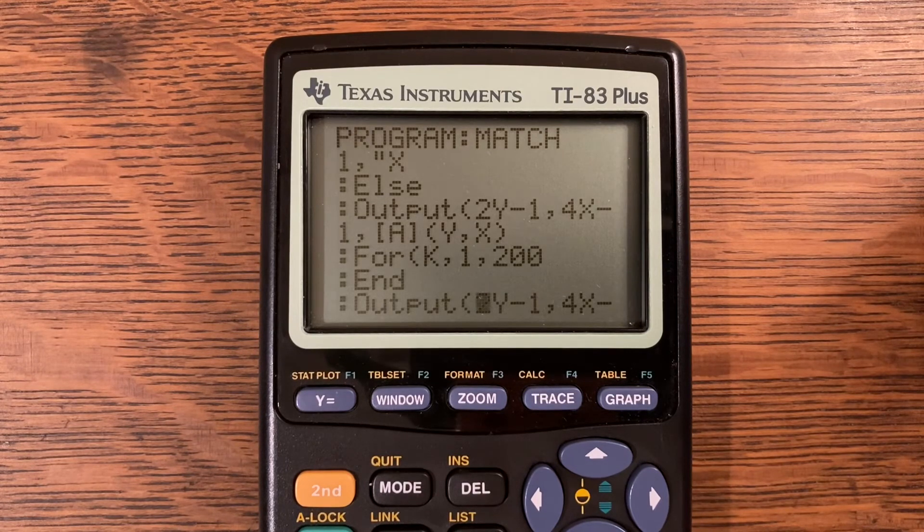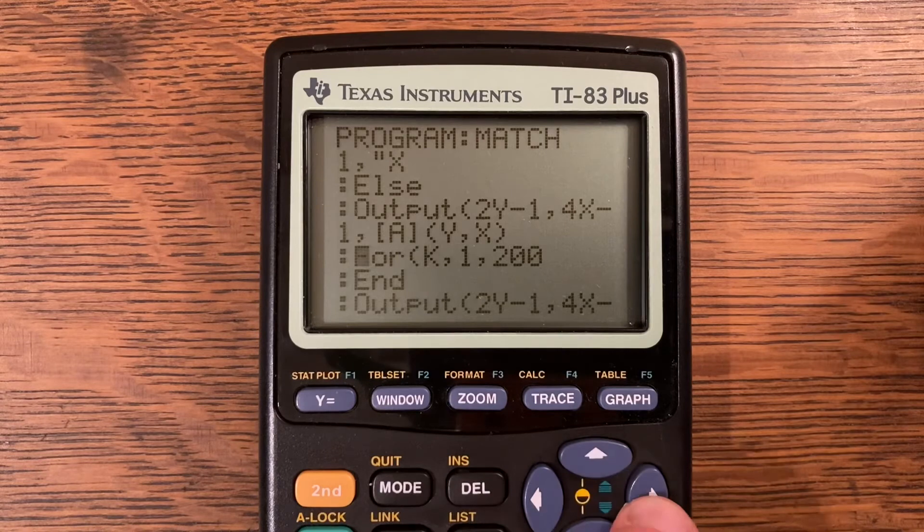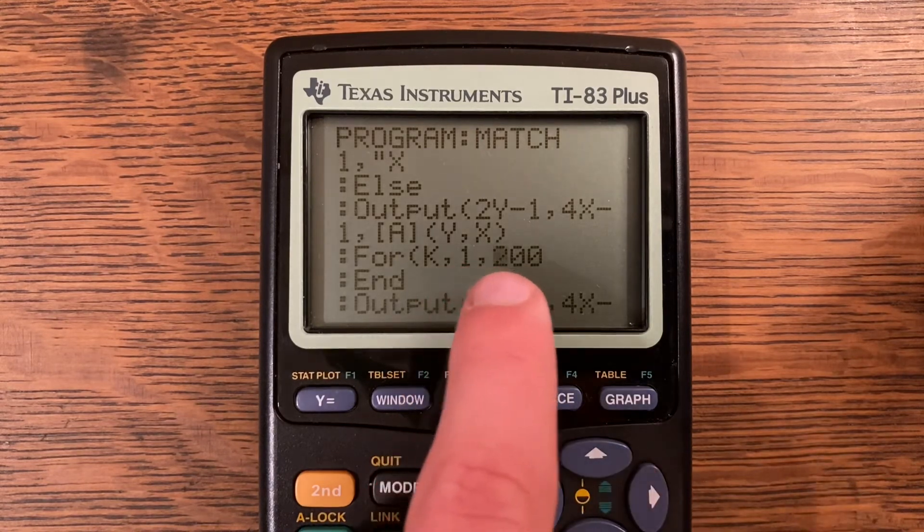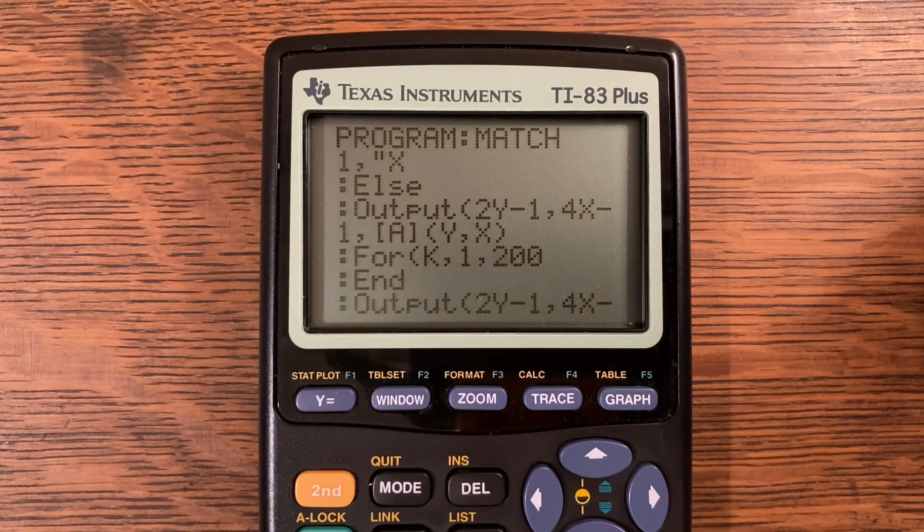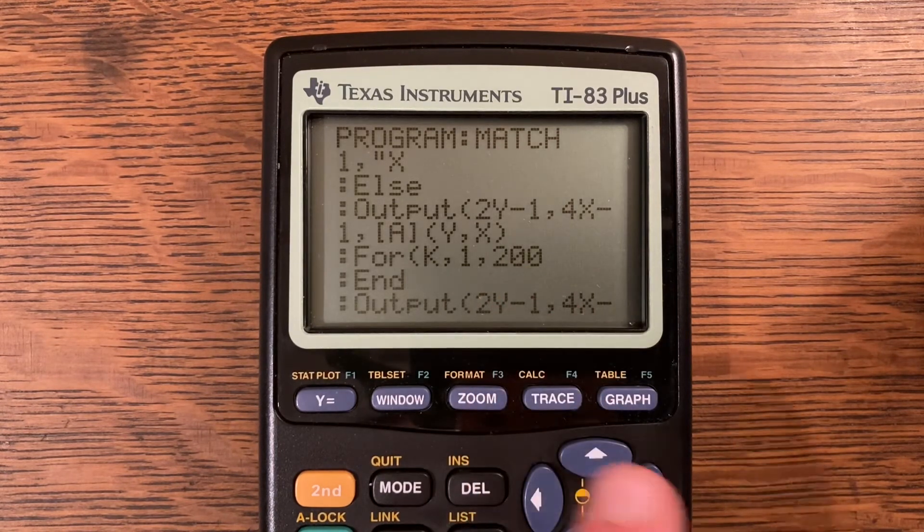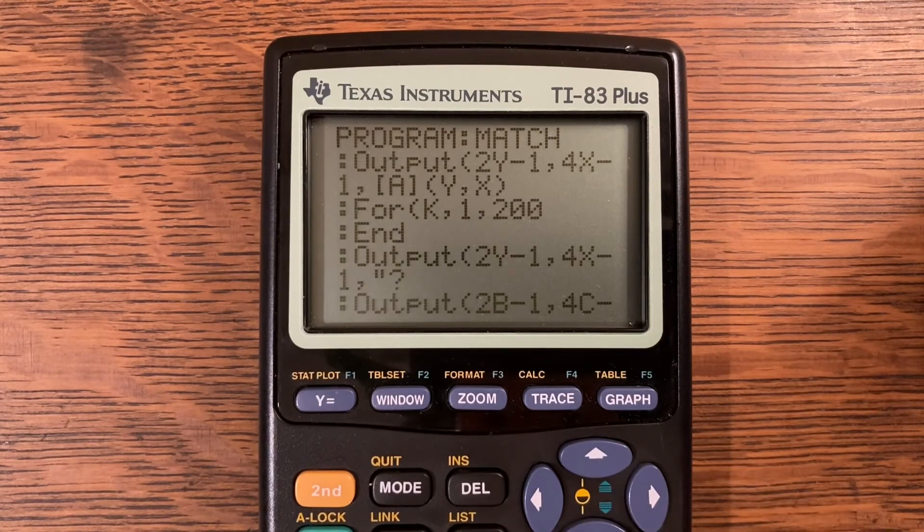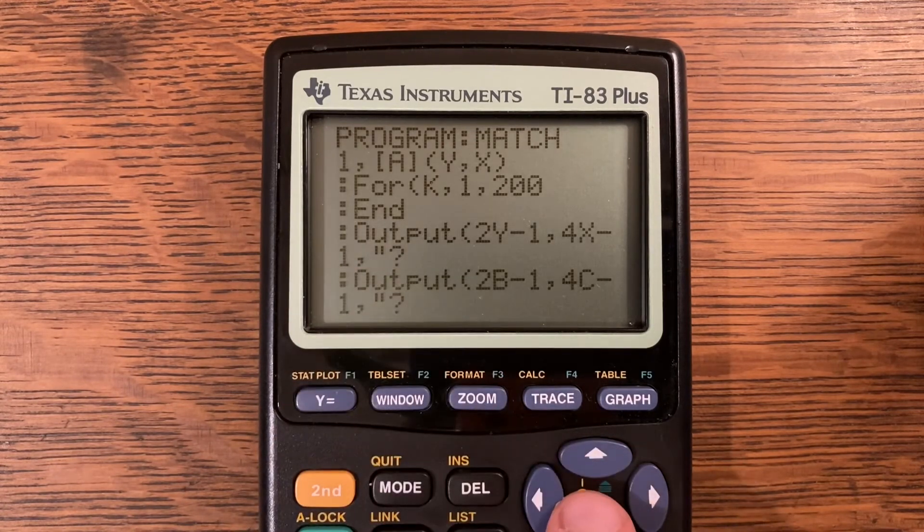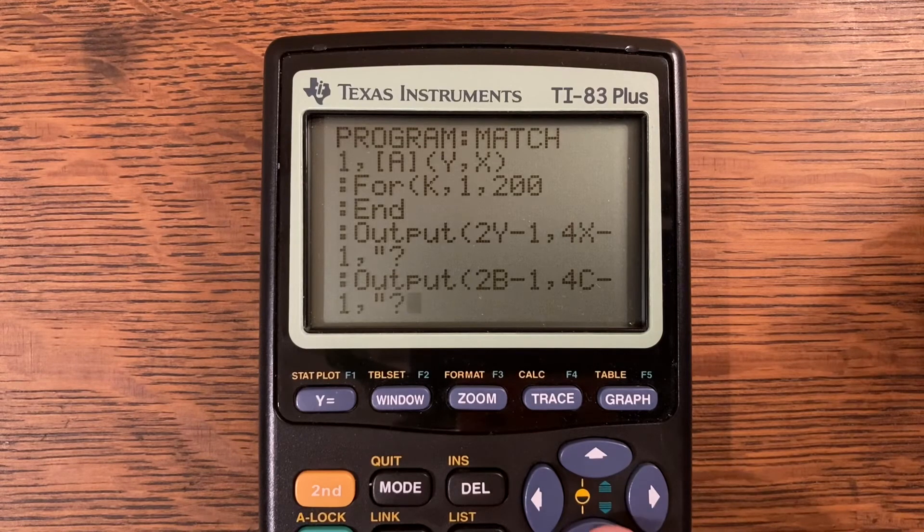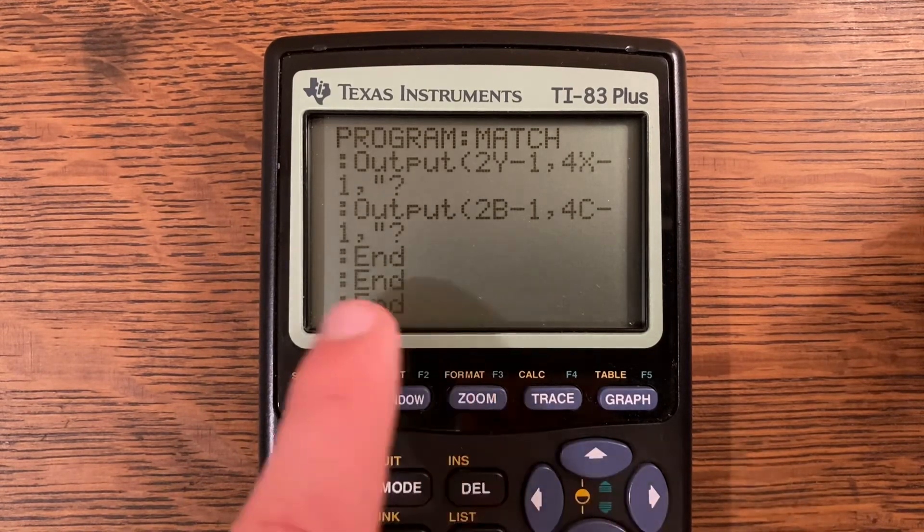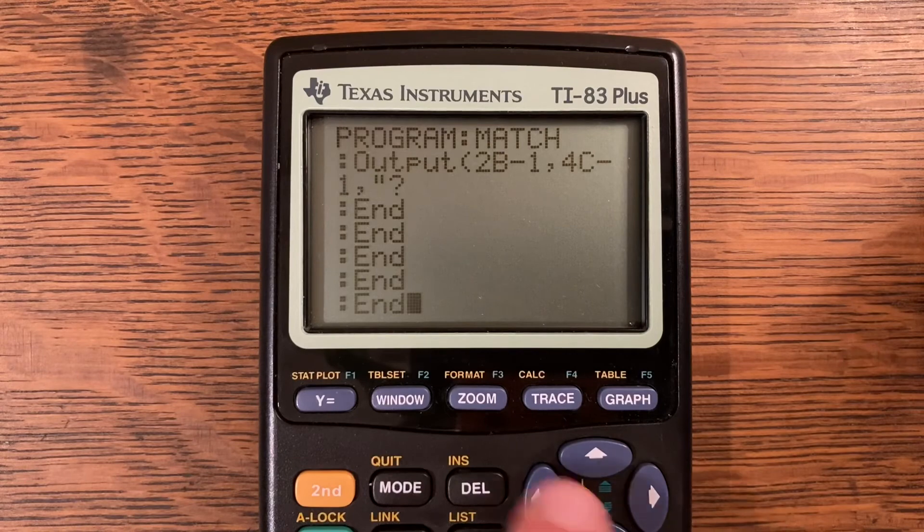If you would like to make it a longer pause, you just make this second number here a greater number, so if I wanted to make it longer I could make it 250 or 500. Just know that the longer you make it, the longer the player will have to wait. You could also make it shorter to make the game a little bit harder. Output 2Y minus 1 comma 4X minus 1 comma quote the question mark right there. Output 2B minus 1 comma 4C minus 1 another question mark. And End, End, End, End, End, so there's five Ends there. That is the end of the program.